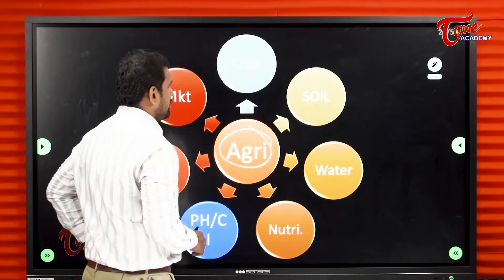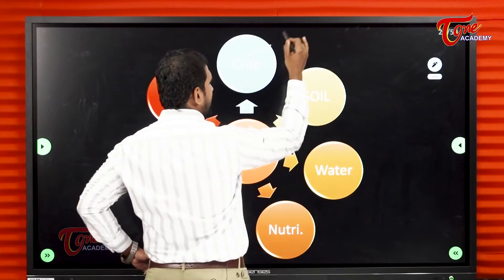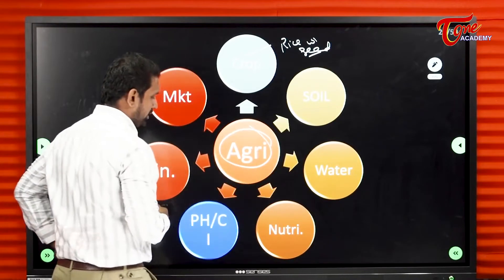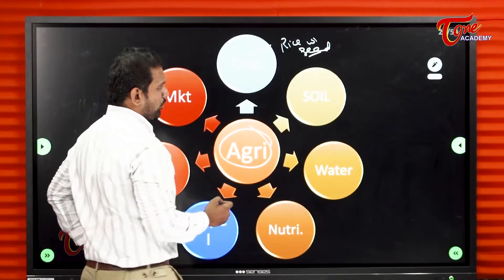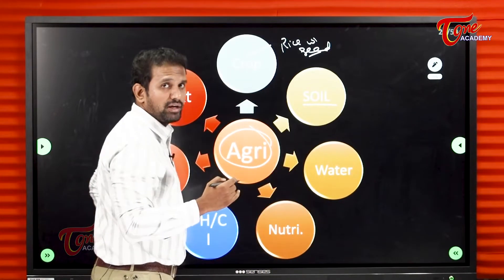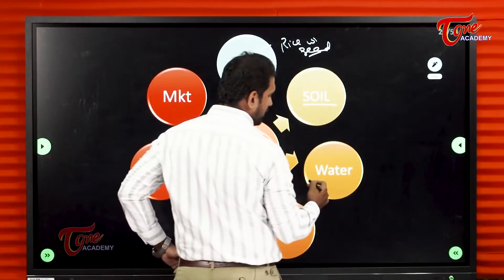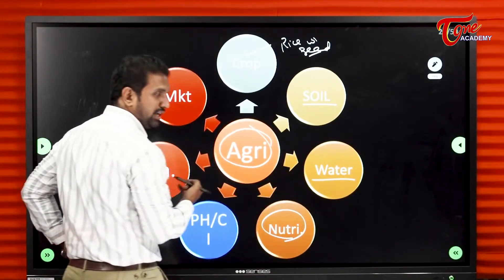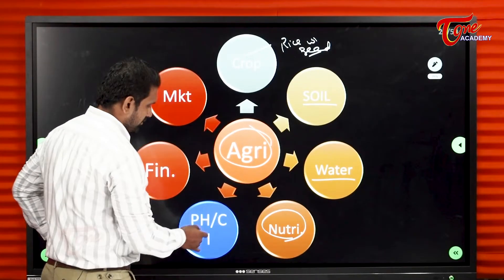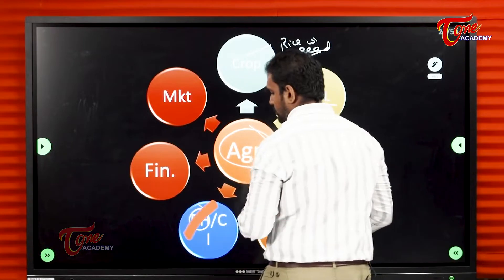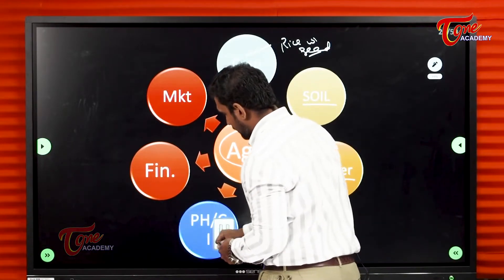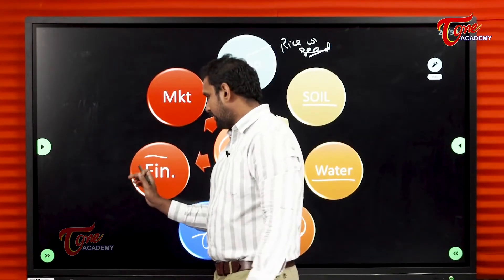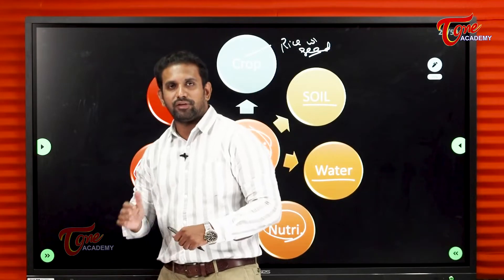For agriculture, first of all you should have a crop — select a crop like rice or wheat. You need a seed, you need good nutrient soil. Then you need water. Then you need nutrients like urea and fertilizers. Post-harvest infrastructure like cold storages and godowns is also needed. Then very very important for agriculture is finance.